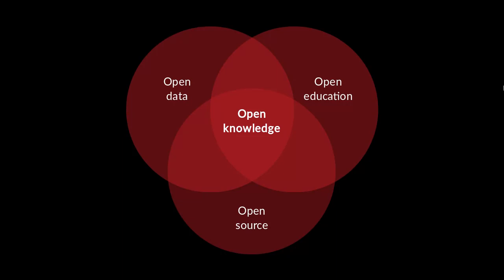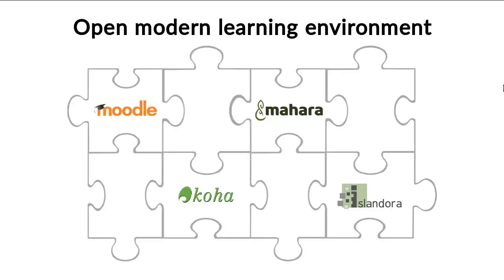We also see that open source underpins the ability to deliver open knowledge. We've got all these other open movements — open education, open government, open data — and we really see open knowledge at the centre of a lot of those movements. So we've created a group at Catalyst that is essentially about delivering that, and we believe that by bringing the right open source projects together, we can help deliver open modern learning environments better and give much better student experiences and better experiences for teachers through seamless integration.